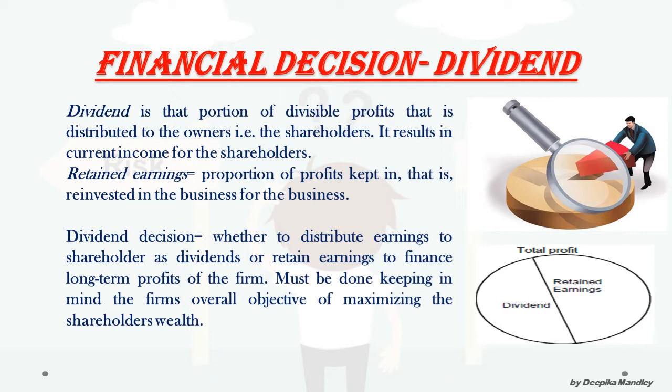The company cannot just randomly decide how much dividend to give or how much to keep as retained earnings. If they give more dividends, they may not be keeping enough for future growth, which is also important. If they keep a large amount as retained earnings, shareholders — for whom dividends are the return — may not be happy and may start disinvesting their interest from the company. Therefore, this decision needs to be taken very carefully.